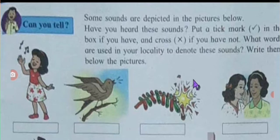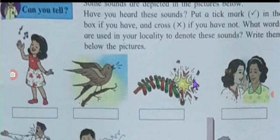In the first picture, you can see a girl who is singing a melodious song in a sweet voice. The second picture shows the chirping of a bird — a sparrow is chirping here. The third picture is of the bursting of crackers — fireworks are shown here. The fourth picture shows two girls whispering with each other.